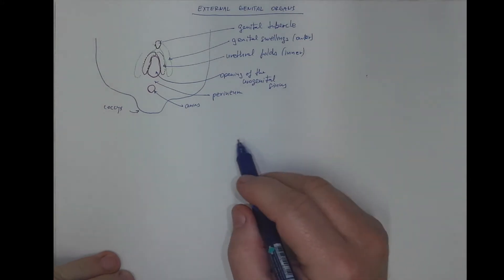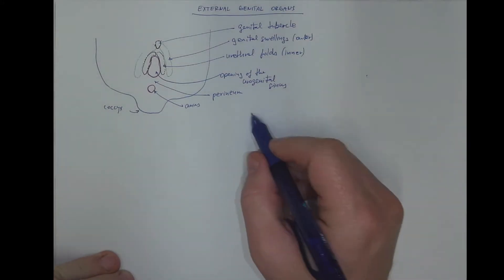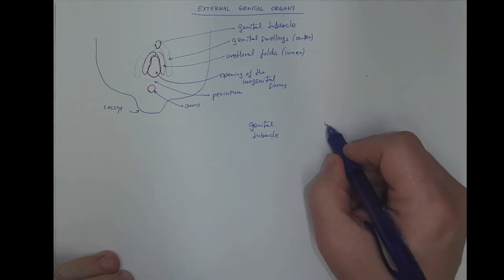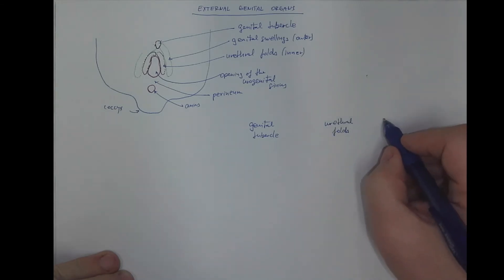Now what becomes of these indifferent structures? The genital tubercle, the urethral folds, and the genital swellings.